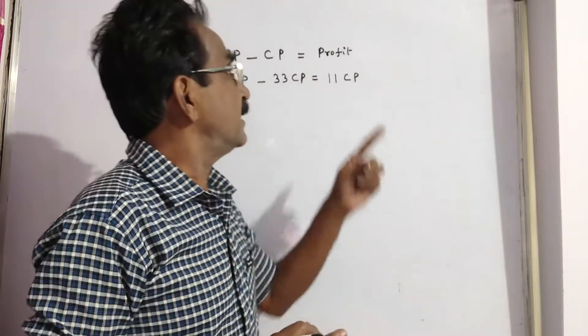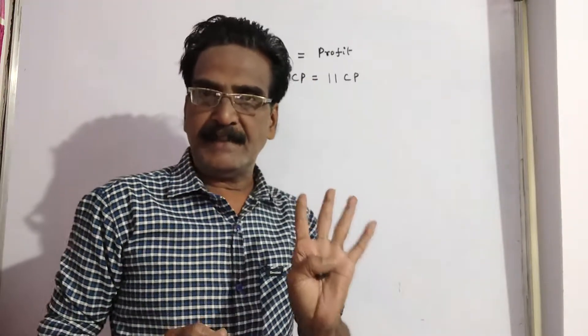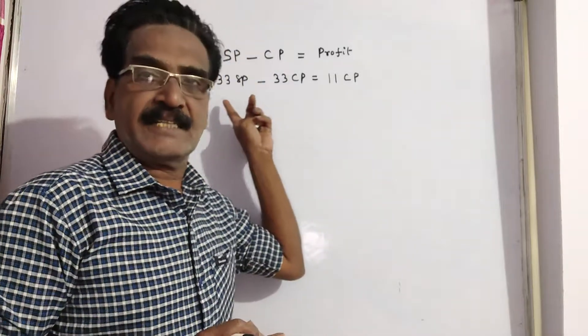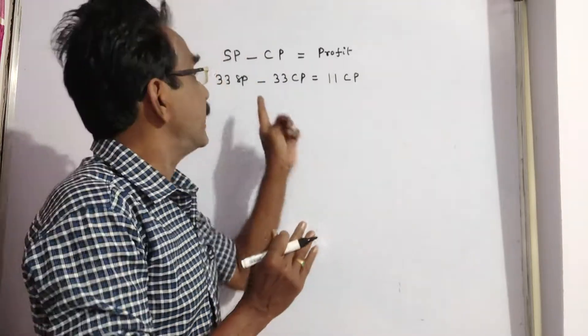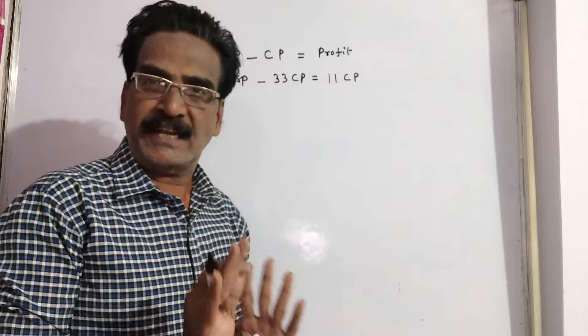What is the profit? It is given that the cost price of 11 meters. So now the equation is 33 SP minus 33 CP is equal to 11 CP.